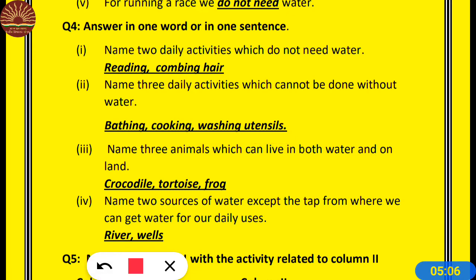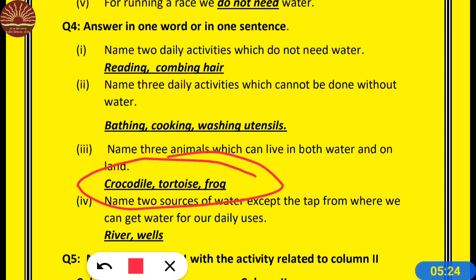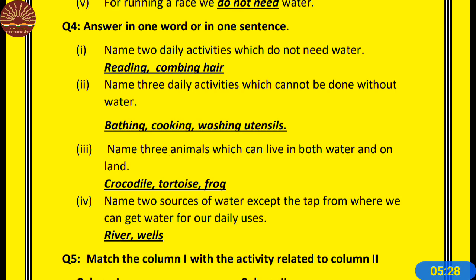Number 3: Name three animals which can live in both water and on land. These animals are called amphibians. Kya aap paani ke andar zinda reh sakte hain? Maybe not. The three animals are crocodile, tortoise, and frog — they can live in both water and on land.